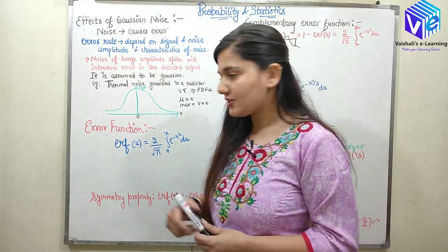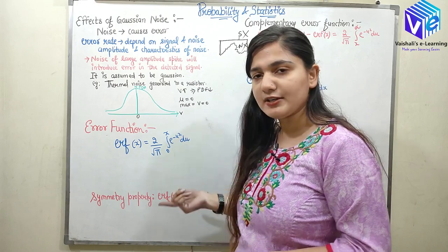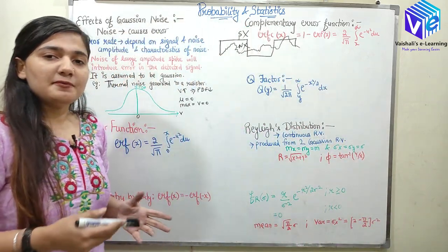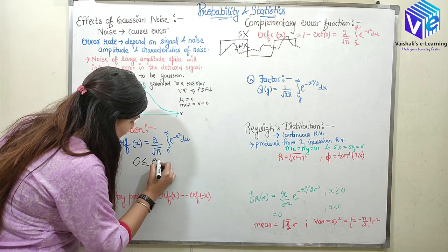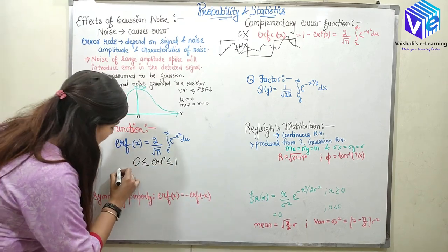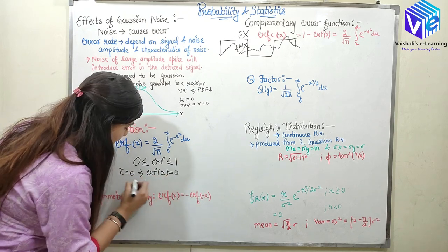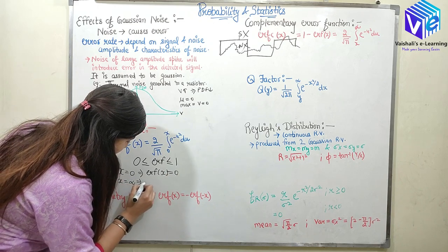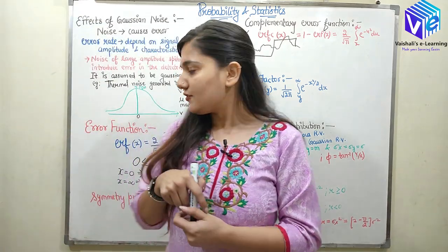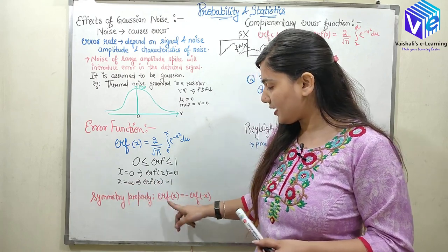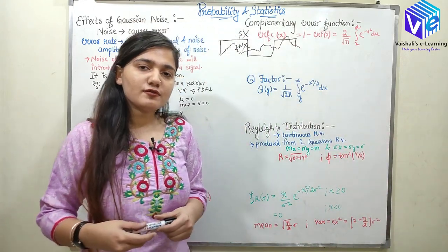Coming to the next topic: the error function. The error function is denoted by erf(x), which is equal to (2 / √π) times the integral from 0 to x of e raised to the power minus u² du. The value of the error function is between 0 and 1. When x equals 0, erf(x) equals 0; when x equals infinity, erf(x) equals 1. The error function follows the symmetricity property: erf(x) equals minus erf(minus x).